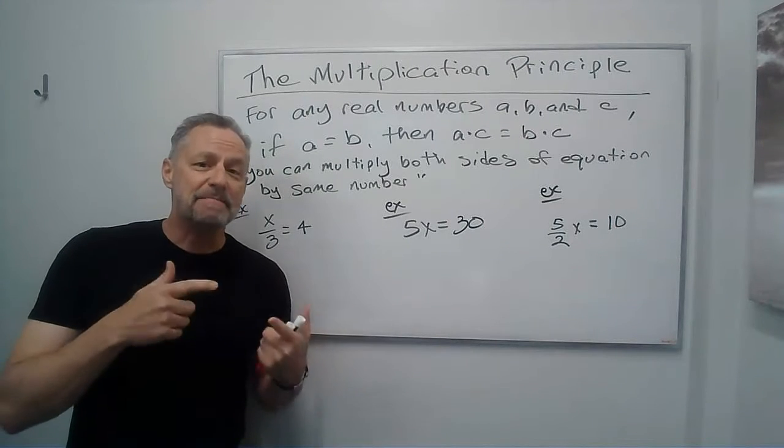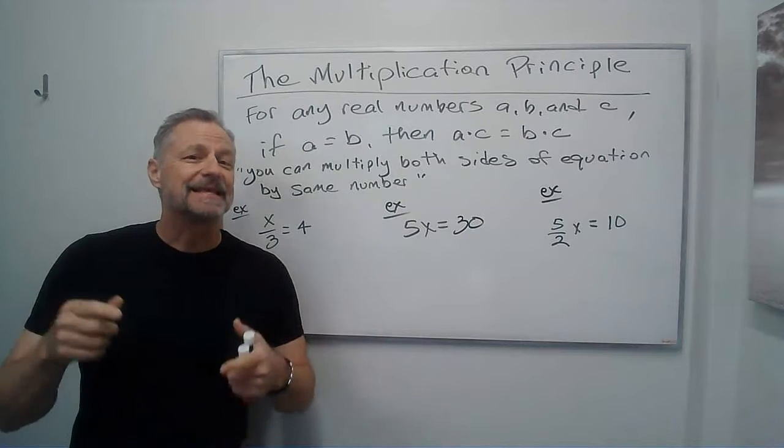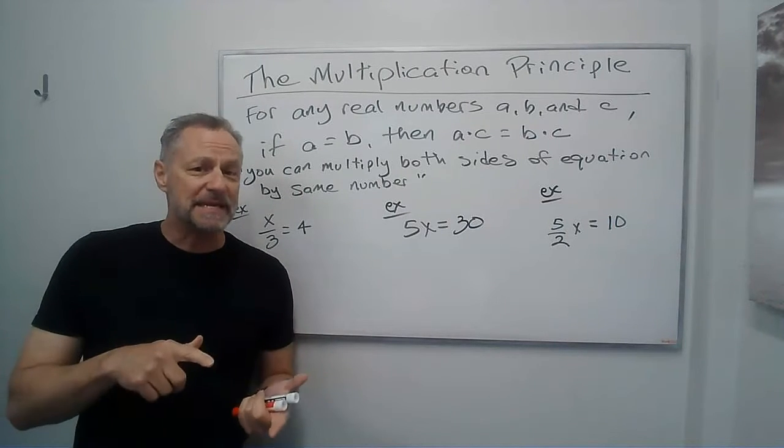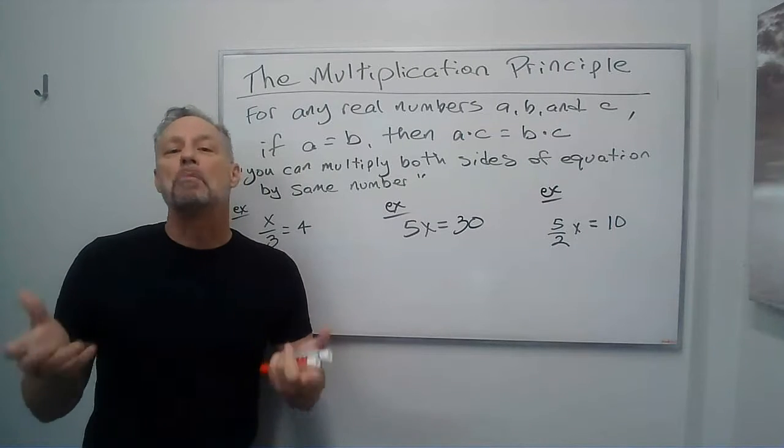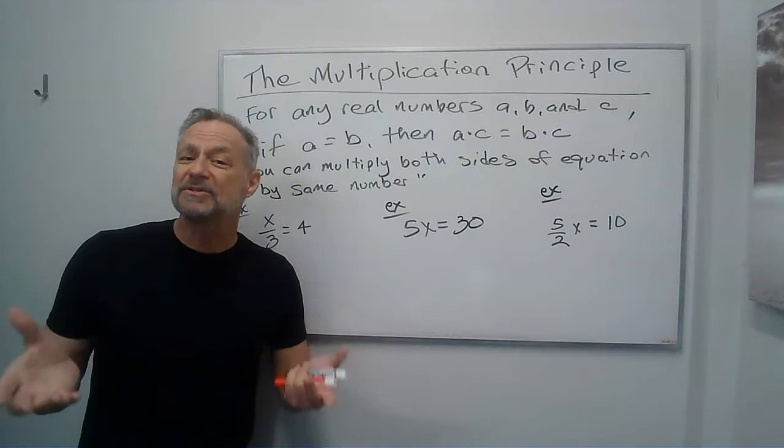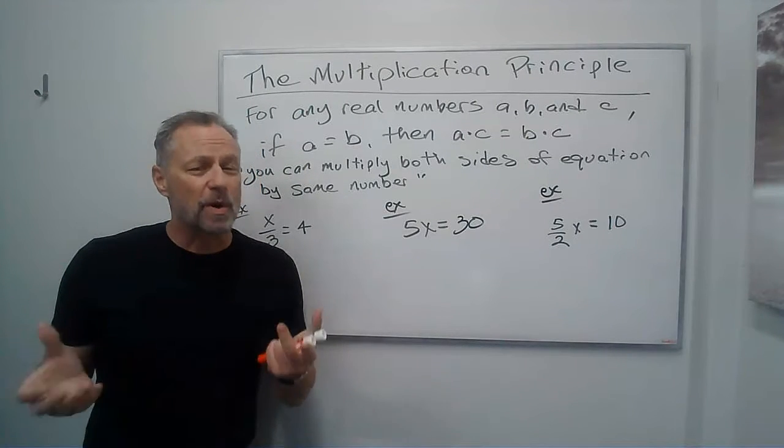What it says is if a, b, and c are real numbers, then if a equals b, then a times c equals b times c. In other words, you can multiply both sides of the equation by the same number, and the equation is still going to be true.